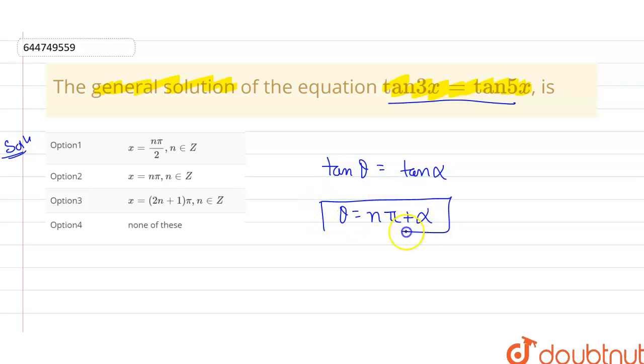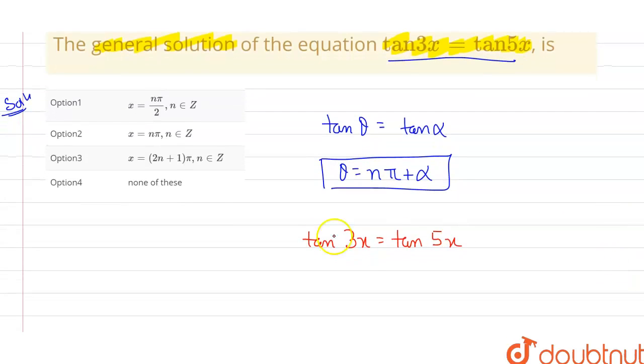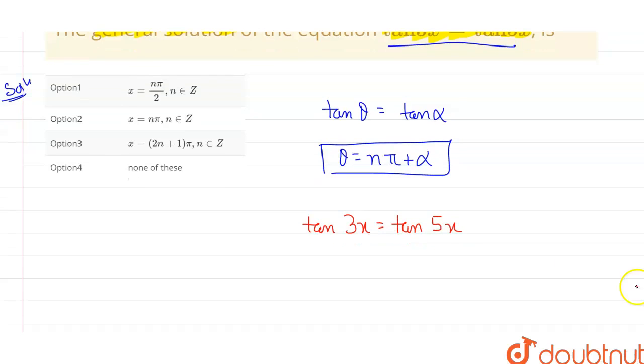Here it is given to me that tan 3x equals tan 5x. So in that case, if I consider θ is 3x and α is 5x, then from this the solution we are going to receive is 3x = nπ + 5x.